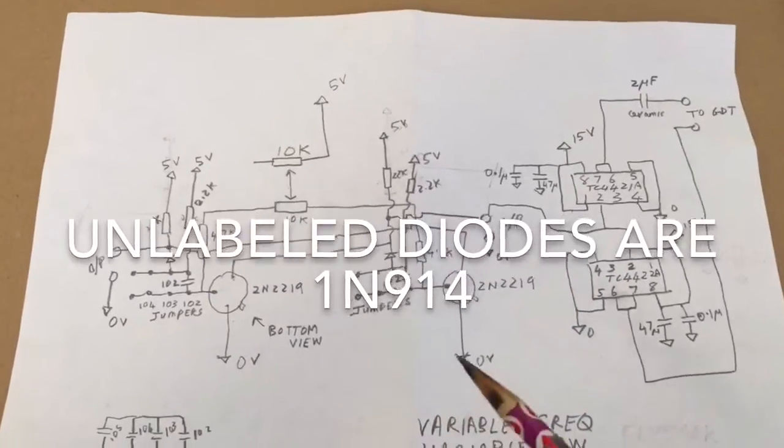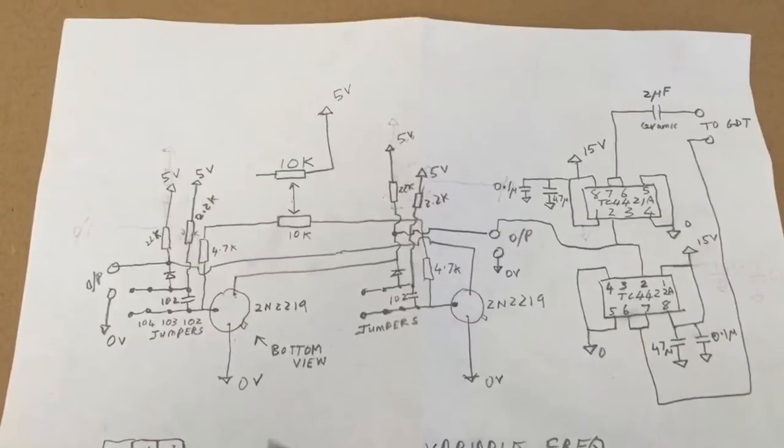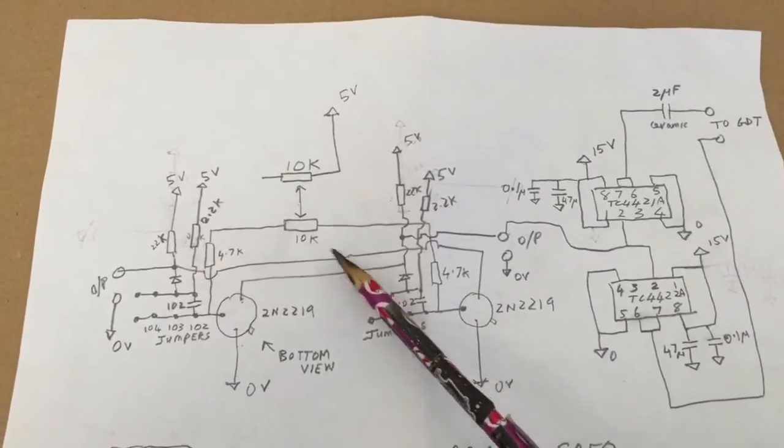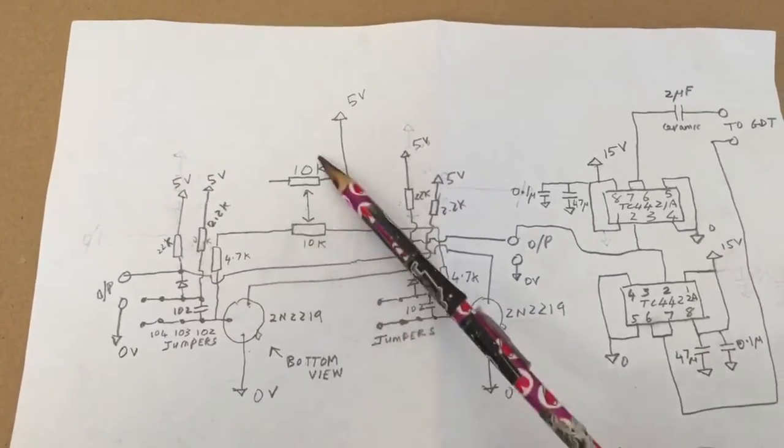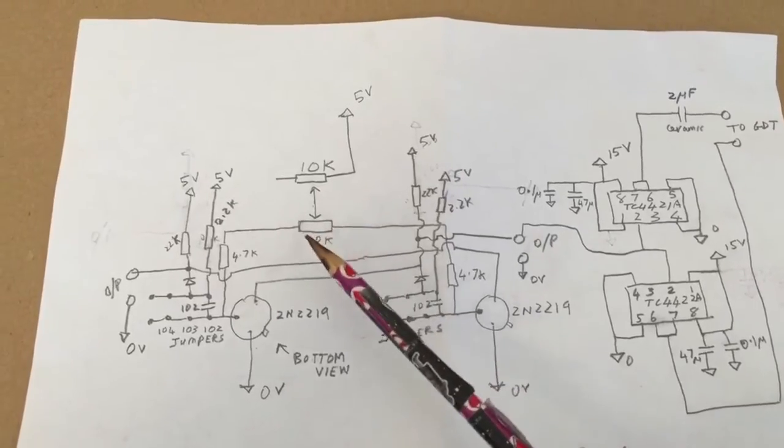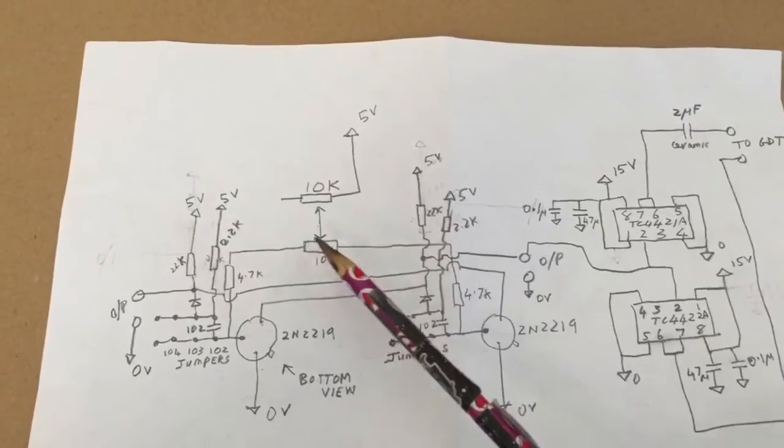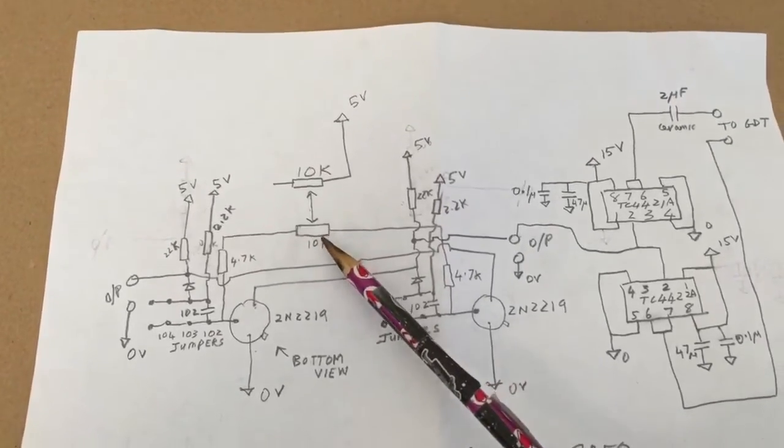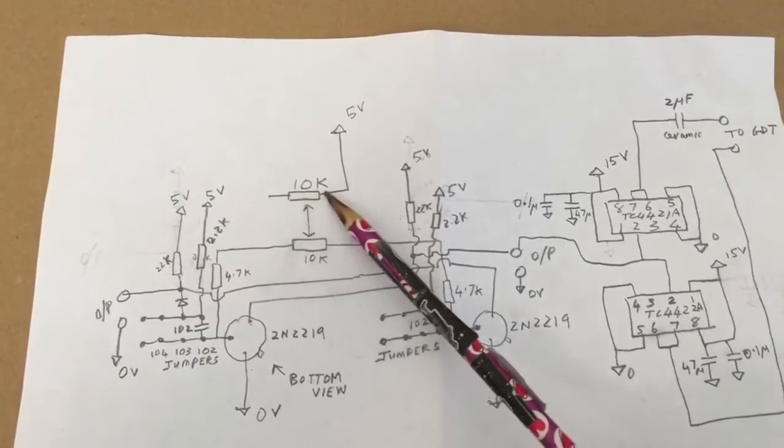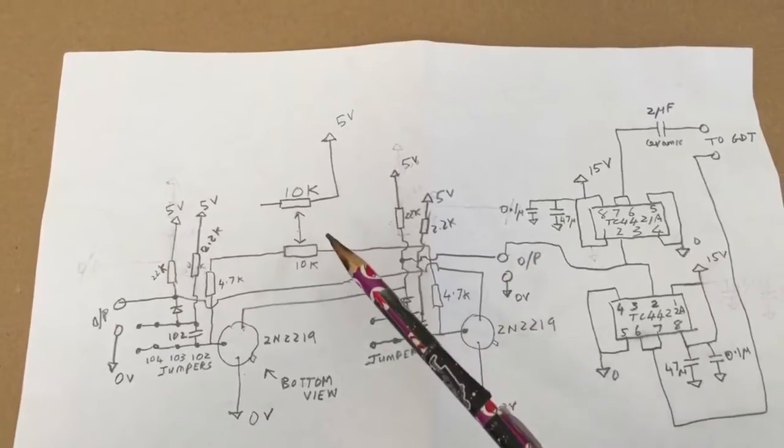This is a very basic astable circuit that self-oscillates, producing square wave outputs. The circuit is modified so that it's got two 10k pots. What you can do with these pots is: if you vary this one here you can change the pulse width of the square wave output, and if you vary that one you can vary the frequency of the square wave output.